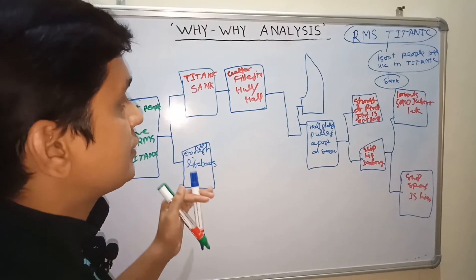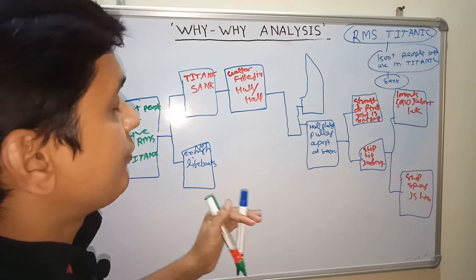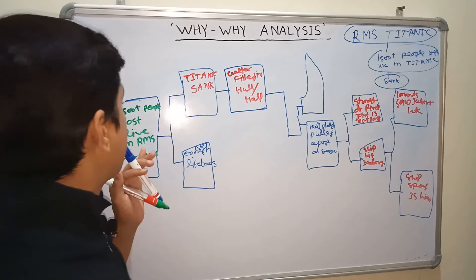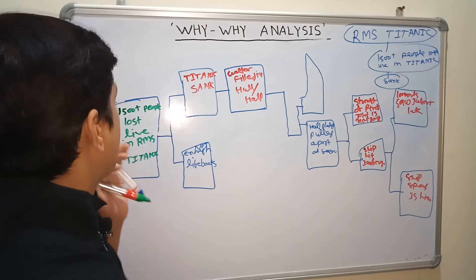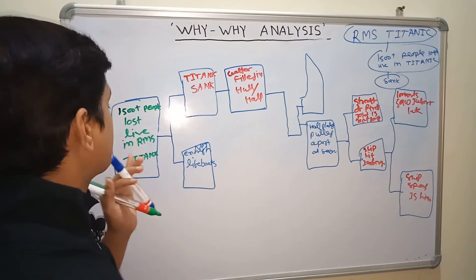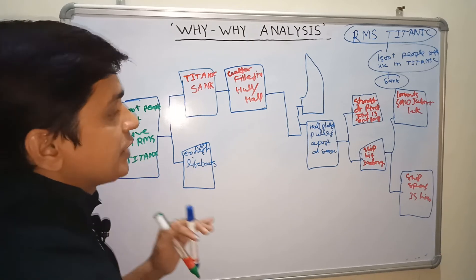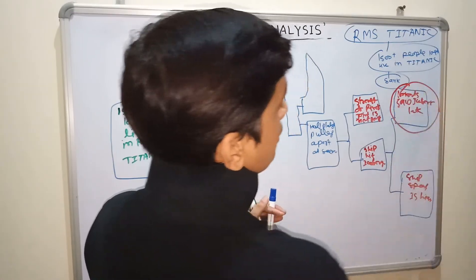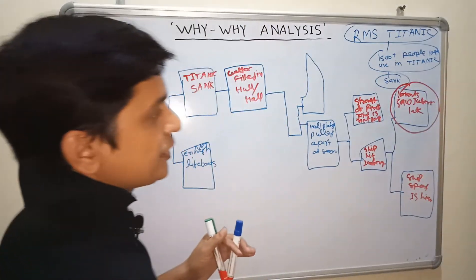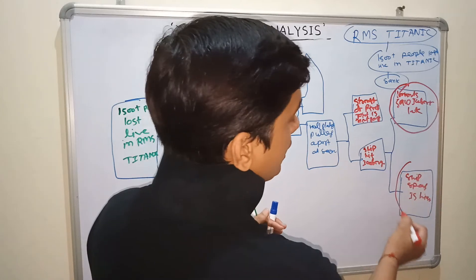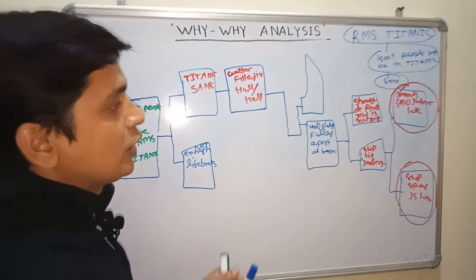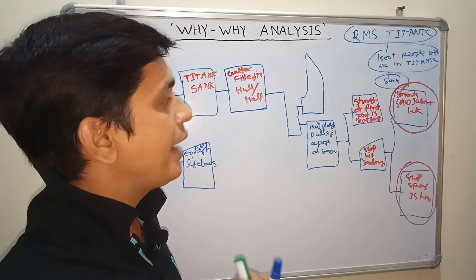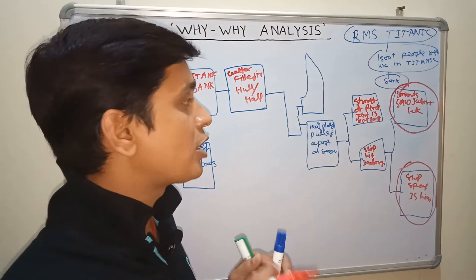So on the basis of Why-Why Analysis, we have found two root causes of the problem — why Titanic sank and why 1,500 people lost their lives in RMS Titanic. The first root cause is: the iceberg was seen late. And the second root cause is: the ship's speed was high.